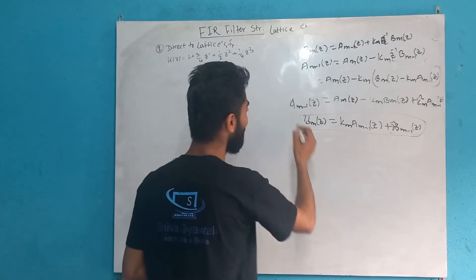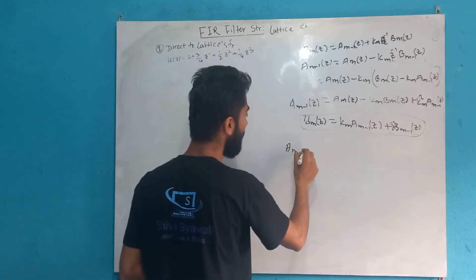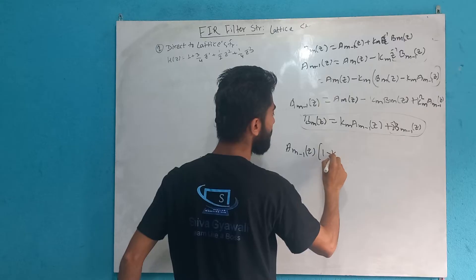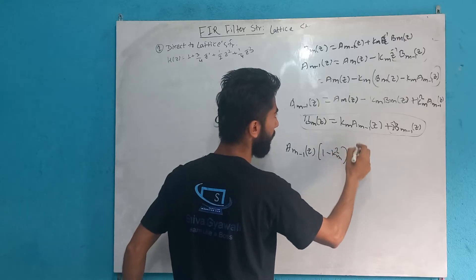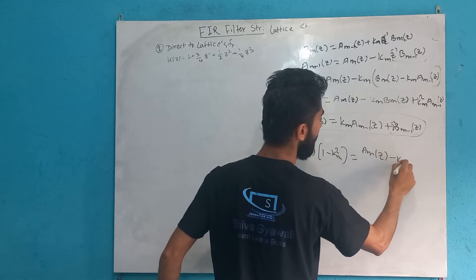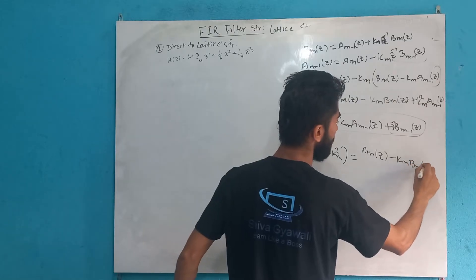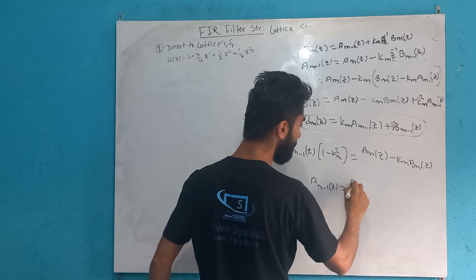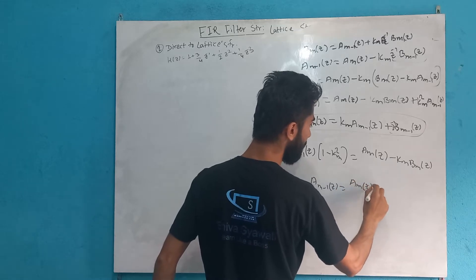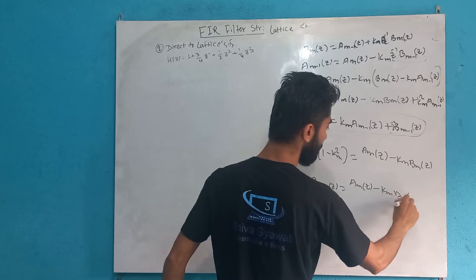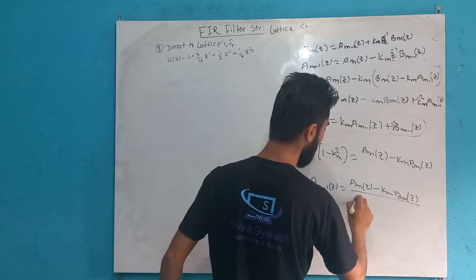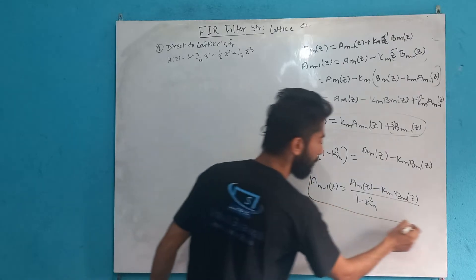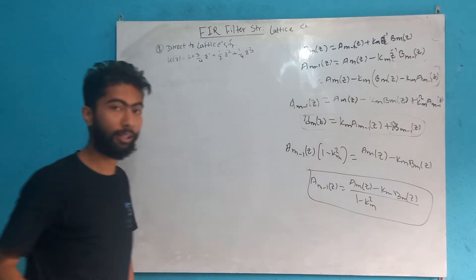Here we have A_{m-1}(z). We will see the minus k_m^2 term here. The key formula is: A_m(z) minus k_m * B_m(z) is equal to A_{m-1}(z). So we use: A_{m-1}(z) = [A_m(z) minus k_m * B_m(z)] divided by (1 minus k_m^2). We use this formula to convert direct to lattice structure.